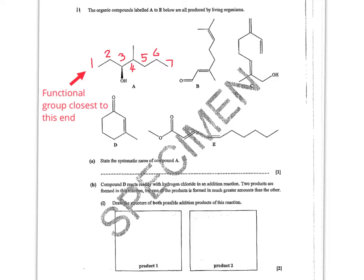In this question they want you to work out the systematic name of compound A. To do this I need to work out how many carbons are in the longest carbon chain — there are seven — and it's an alcohol because of the OH functional group. I need to decide the locant numbers: the positions on the chain of the methyl group and the OH group. Counting from left to right, because the left-hand end is closest to the functional group, it's going to be heptanol. The OH group is on carbon 3 and there's a methyl group at carbon 4, so the name is 4-methyl-heptan-3-ol.